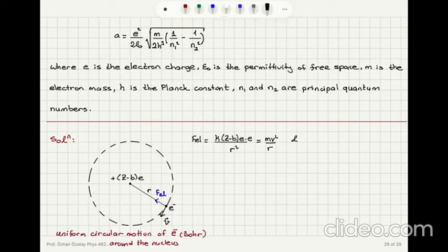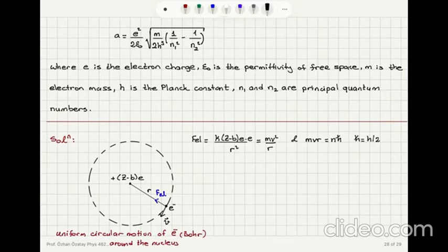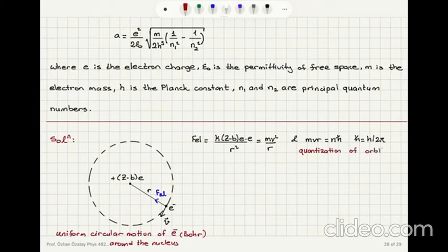According to Bohr's postulate, the angular momentum mvr — or r cross mv — is equal to nħ, where ħ is the reduced Planck's constant h divided by 2pi, and n is an integer. This is the quantization of orbital angular momentum in the Bohr model — one of Bohr's postulates.